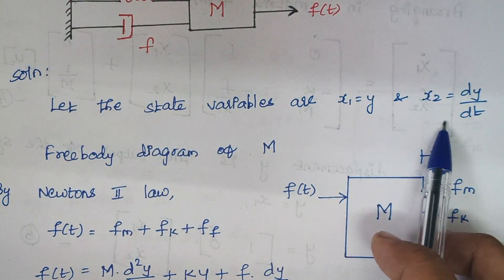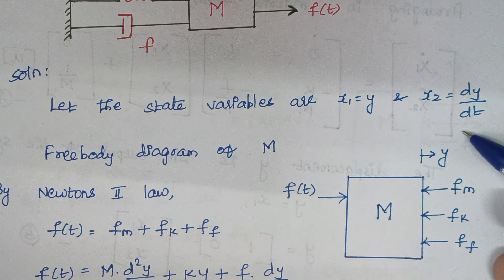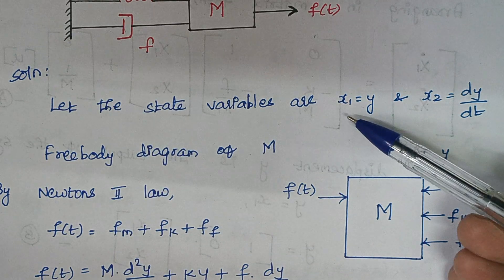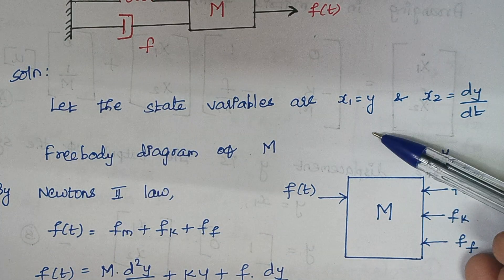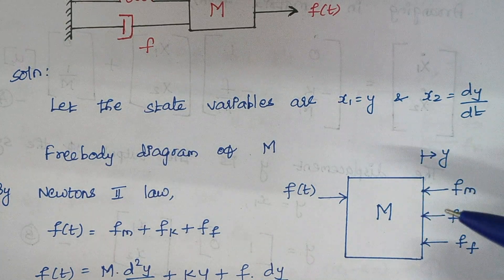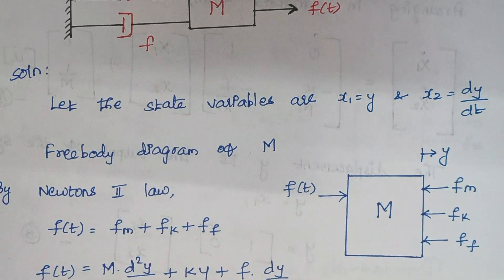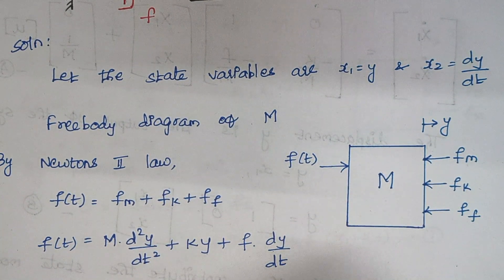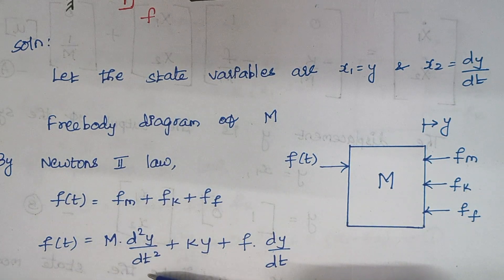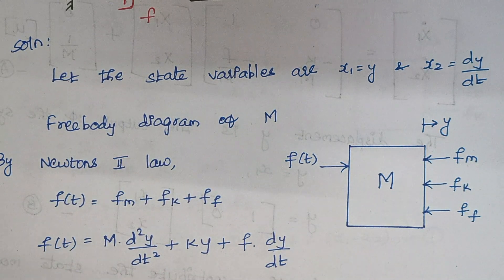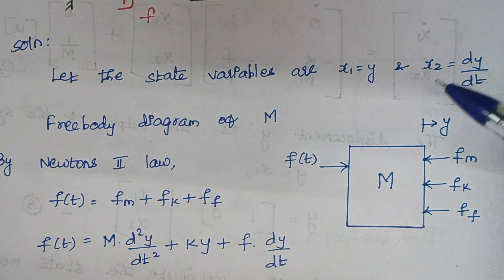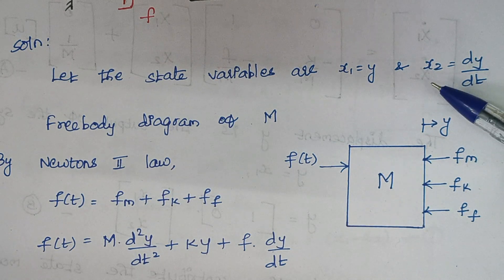So x2 is equal to dy/dt. We could write x1 dot as dy/dt, but then we can't substitute here because we can't enter a double differentiation term — state variables are always single differentiators, that is, one-time differentiators. That is the reason why we are taking dy/dt as another state variable x2.